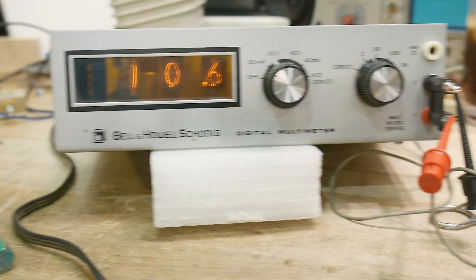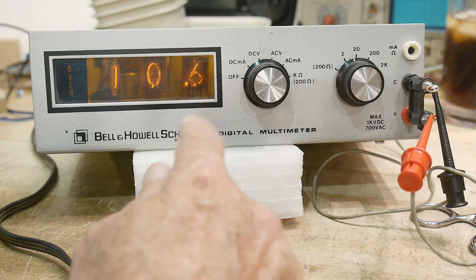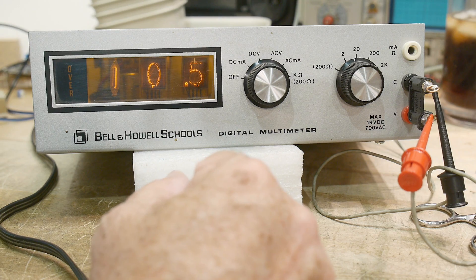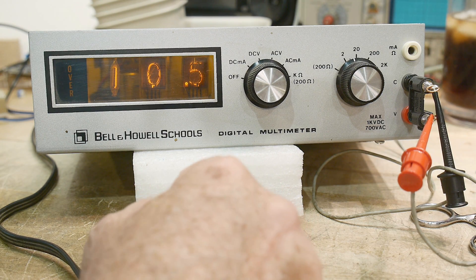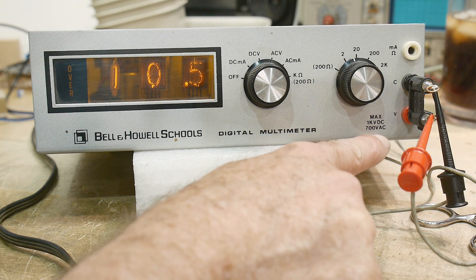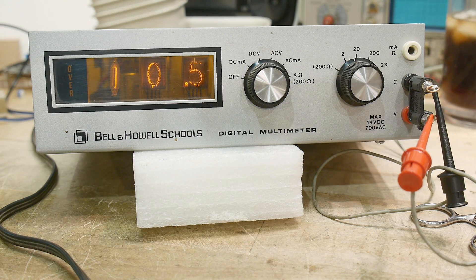Like I said, I'll calibrate it tomorrow. I'll see if I can find a data sheet for this thing. I probably don't even need a service manual to calibrate this. Maximum one kilovolt, 700 volts AC. Yeah, Bell and Howell Schools digital multimeter.